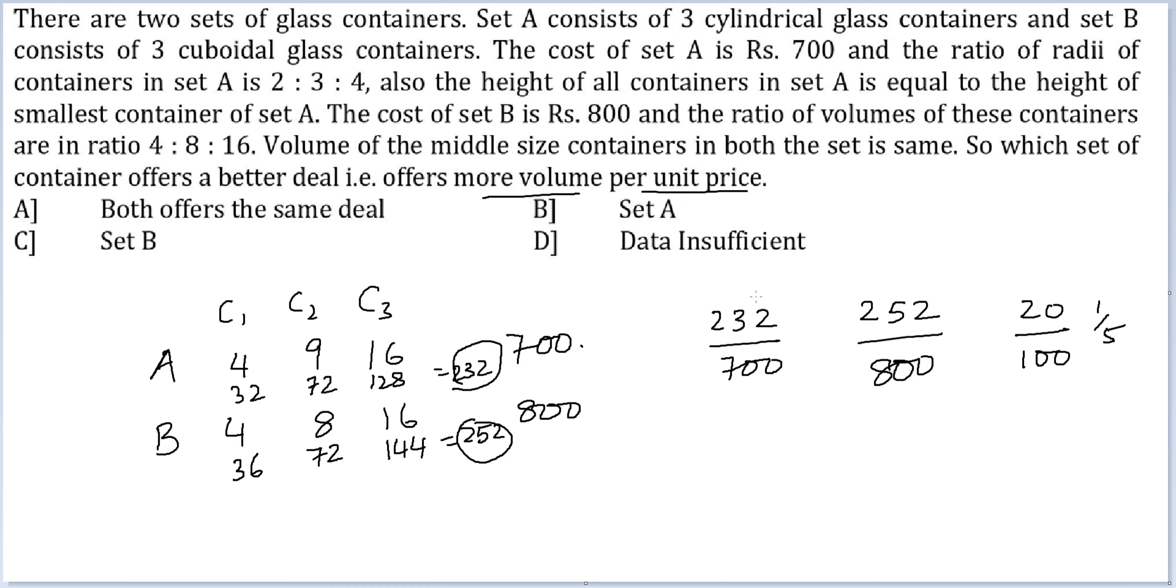So out of the three, this is middling, this is small, this is largest. This largest was for set A. Therefore, which container offers a better deal? The answer will be option B. Set A.